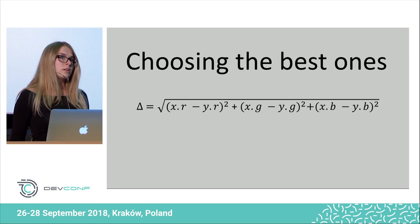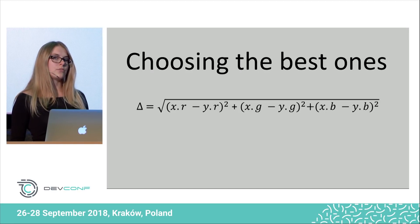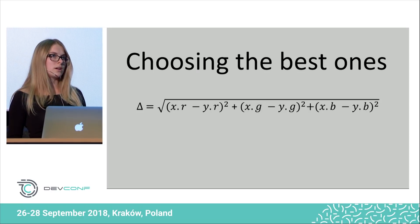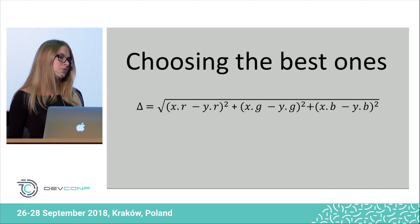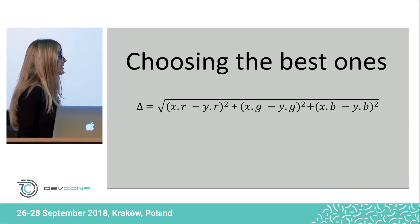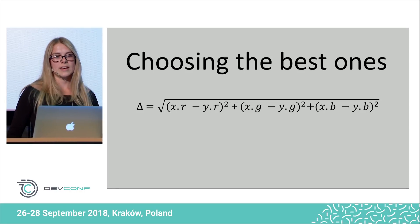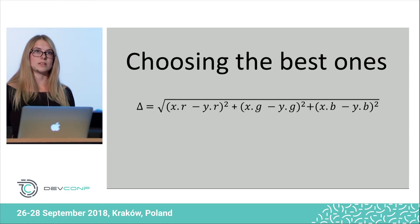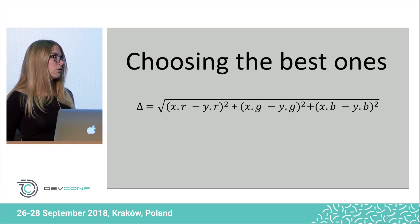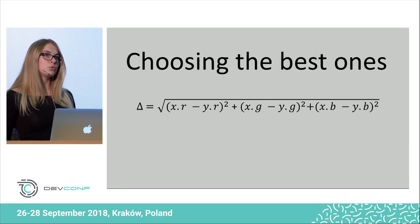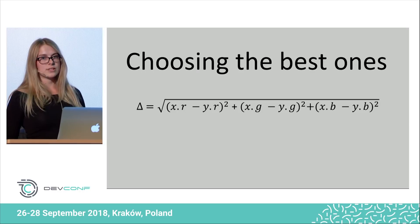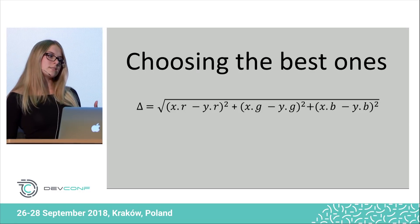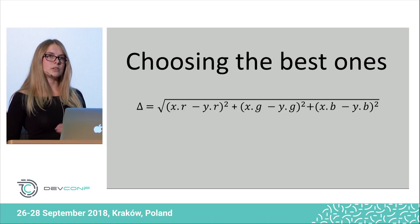Then we choose the defined number of images with the smallest distance, and those chosen ones are going to be the parents for the next generation — the rest is going to be forgotten. There are several other methods of choosing the best one, like roulette wheel selection or tournament selection, but always choosing the ones with the smallest distance is best, because there is no random factor in this part of the algorithm at all.